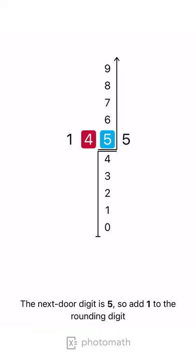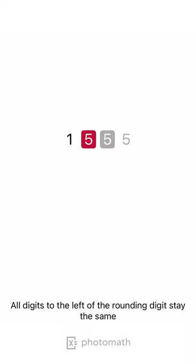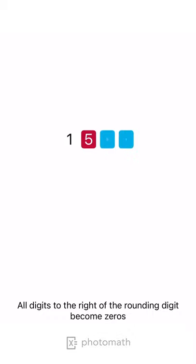The next door digit is 5, so add 1 to the rounding digit. All digits to the left of the rounding digit stay the same. All digits to the right of the rounding digit become zeros.